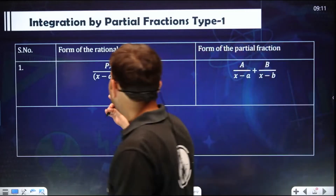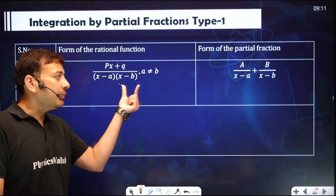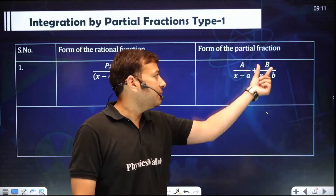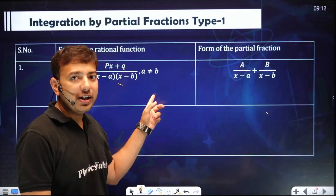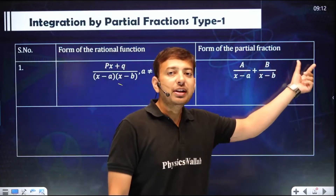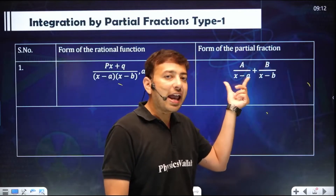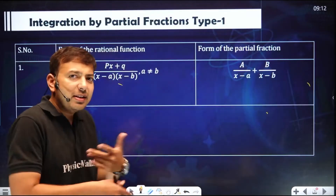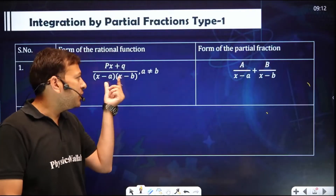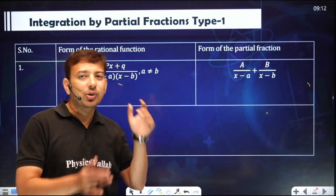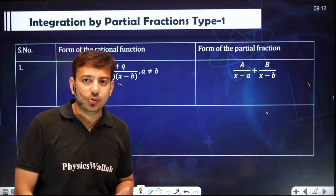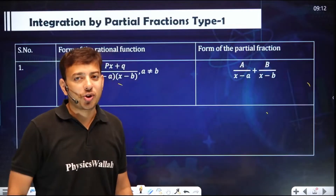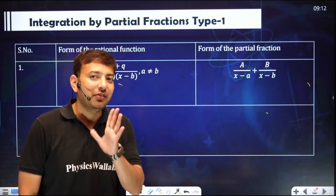Let's take an example. If this is the standard form and non-repeated factors are there, we split it into A over one factor, B over another factor, and C over a third factor — every linear factor gets one constant. This you all know. The basic method is to take LCM, equate each factor to zero, then solve. That is the normal method. Now I'm going to tell you a very quick shortcut so you can solve it in very few seconds.